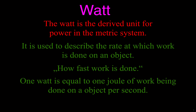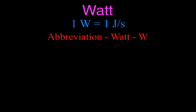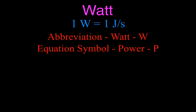One Joule of work per second — that's the mathematical description. One Watt is when we do one Joule of work per second. The abbreviation for the Watt is W, but don't get confused: the abbreviation for work is also W. The Watt is the unit for power, and power is abbreviated with a P. So, if a light bulb or a person does 75 Watts of work, that means they do 75 Joules of work every second — 75 Joules per second.